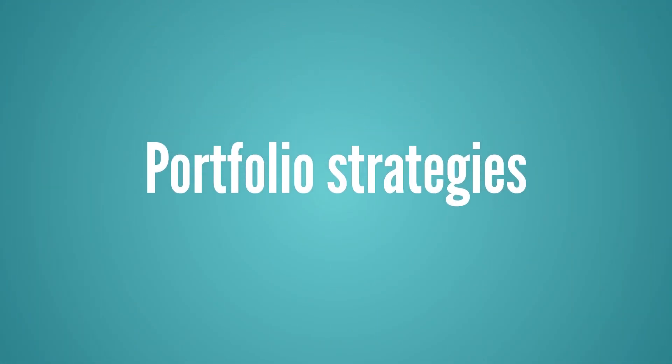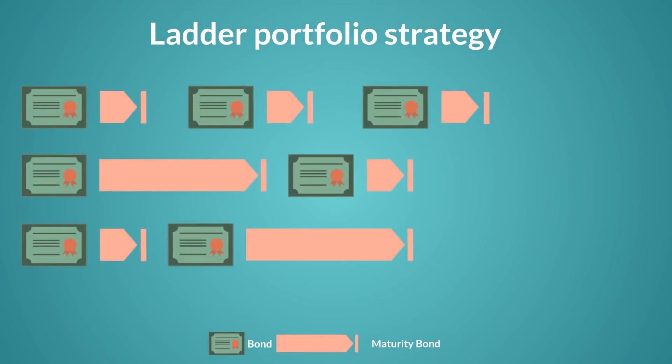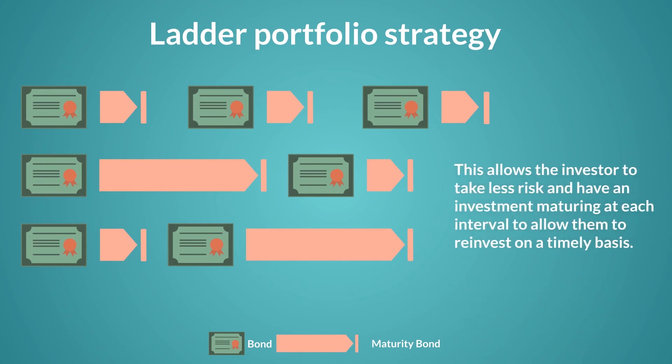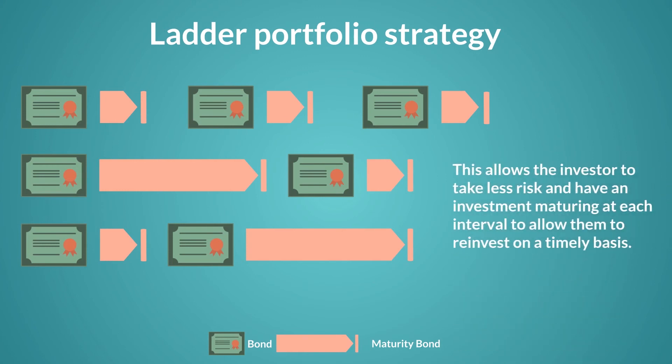Now let's talk about strategies investors can employ to improve their portfolio based on the yield curves we just discussed. In a laddering portfolio strategy, the investor invests equal amounts of securities maturing periodically at certain points on the curve. Investments can be set up to mature each month, quarter, or every year. This allows the investor to take less risk and have an investment maturing at each interval to allow them to reinvest on a timely basis. Most investors use this strategy because it takes the risk out of trying to determine the future slope of the yield curve or timing the market.